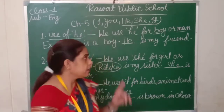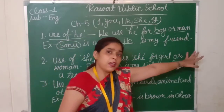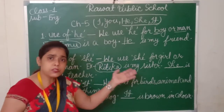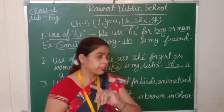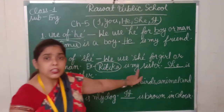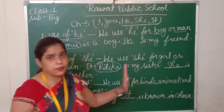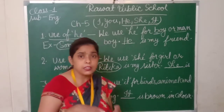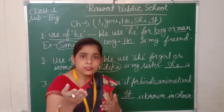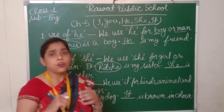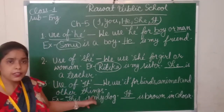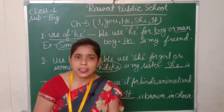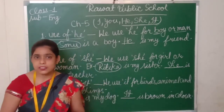So let's recap once again. We use he for any boy or any man — if any boy's name or man's name is given, we use he. We use she for any girl or woman — if any girl's or woman's name is given, we use she. We use it for any birds, any animals, or any things. I hope you must have understood this topic.